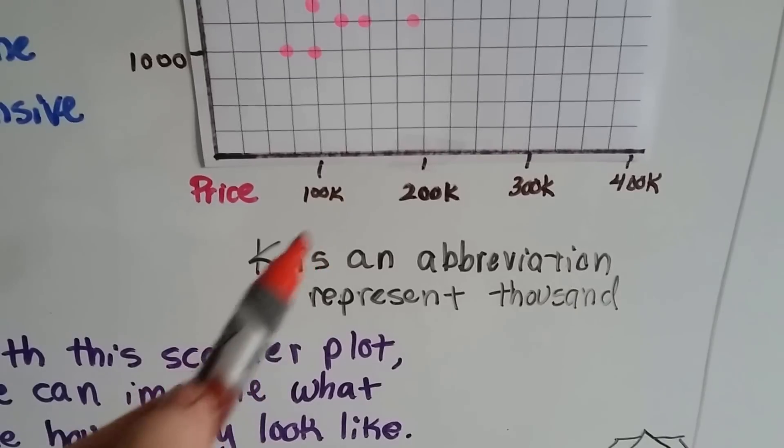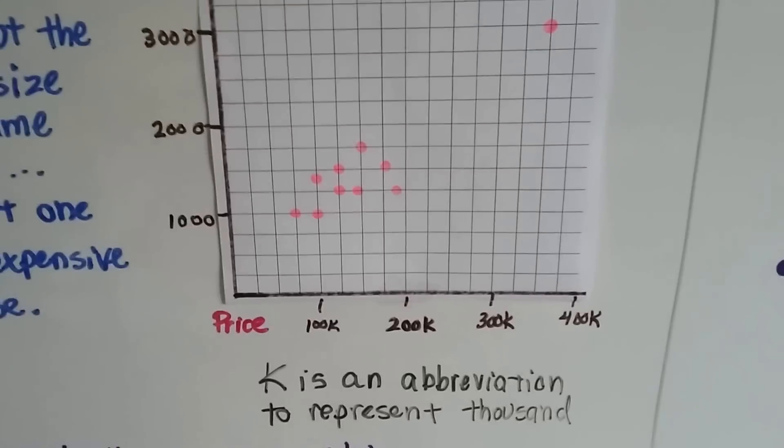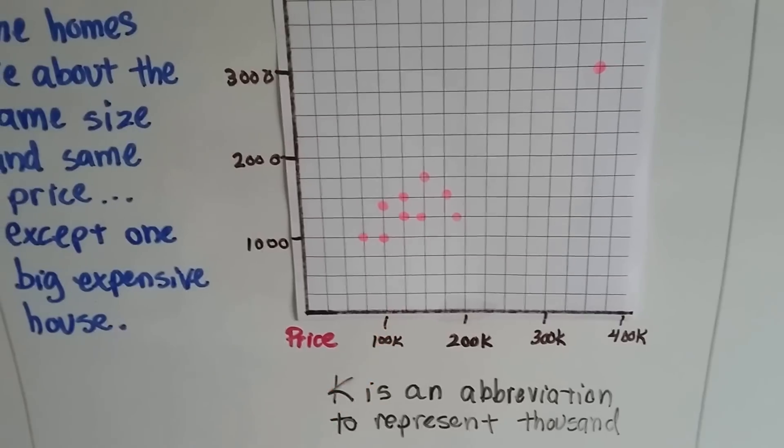Adults use the K because it's an abbreviation to represent thousand. So somebody might say, I just got a job for 50K. That means they got a job for $50,000 a year. The K stands for the thousands.